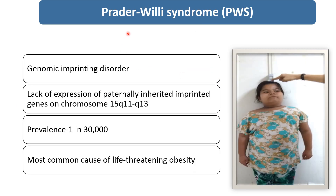In brief about Prader-Willi syndrome: it is also known as a genomic imprinting disorder. Lack of expression of the paternally inherited imprinted gene on chromosome 15 is characteristic. The prevalence is 1 in 30,000. It is the most common cause of life-threatening obesity, or we can say the most common cause of syndromic obesity.